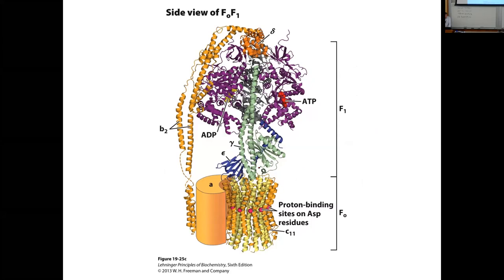Note these little red dots on the outside of the C subunits — those represent the aspartates. These C subunits are like a series of hairpins, and on the outside of the cylinder there is one aspartate per C subunit. It is the aspartate that will carry the protons that are re-entering. The A subunit doesn't have a ribbon diagram because its full structure hasn't been solved — while there's some sense of its location and features, it's not fully understood structurally.